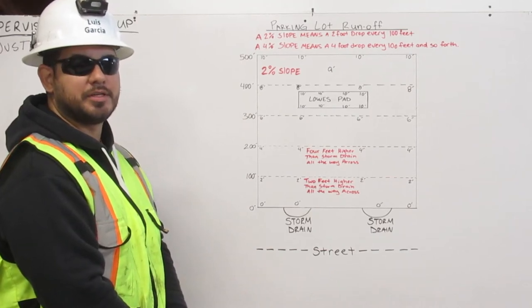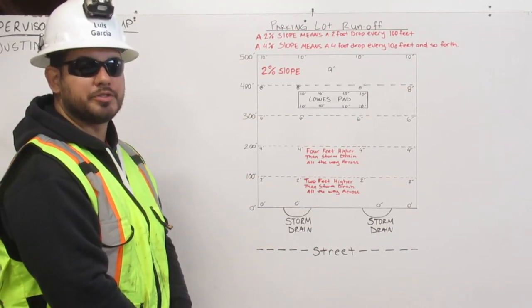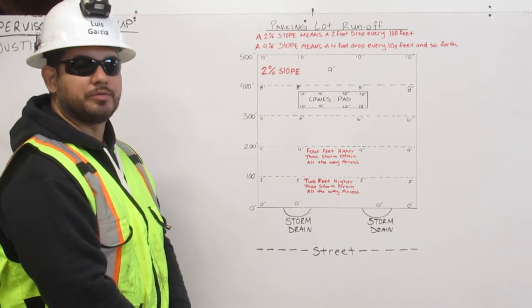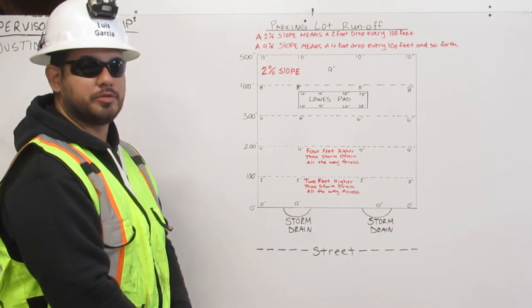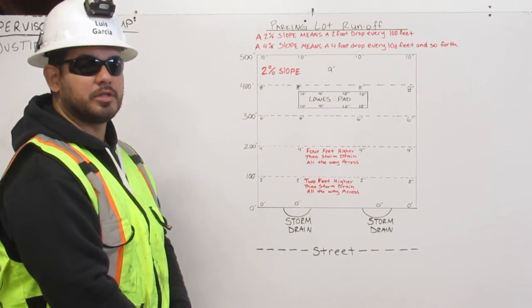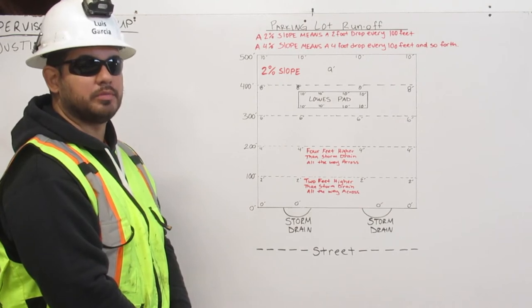Hi, I'm Luis Garcia. I am a Heavy Equipment Operating Engineer and I'm Construction Man Certified. I'm going to demonstrate to you how to lay a 2% slope using a parking lot example. Let me show you.